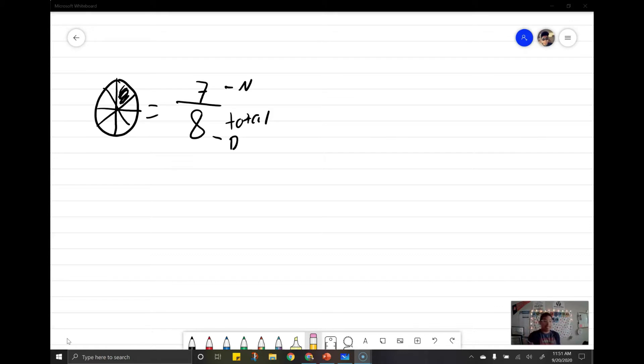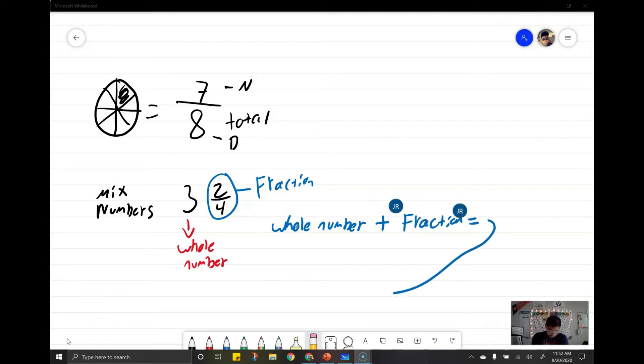Let's see how mixed numbers works. Mixed numbers. So that means I have 3 out of 2 fourths. So this is what a mixed number will look like. So this 3 is my whole number. And then this is my fraction. So that means in order for it to be a mixed number, I have to have a whole number plus a fraction, which will then equal a mixed number.